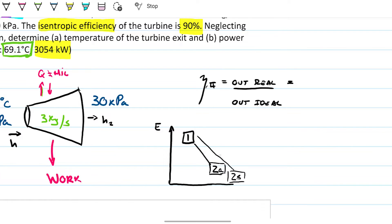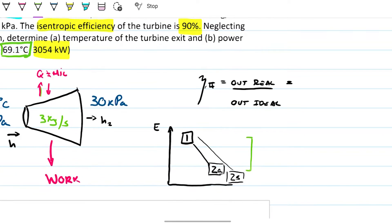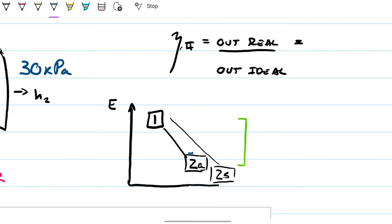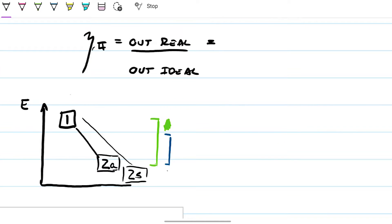So if I were able to go from number one to number two isentropic, note that this gap here in energy is bigger, meaning I can extract more energy from this process as opposed to this one here which is smaller. So how do we do this? Well, exactly like we're seeing here. We're going to take the entropy of state one minus the entropy on state 2A, divided by the entropy on state one minus the entropy on state 2S, okay? And that happens to be 90%. We know that.